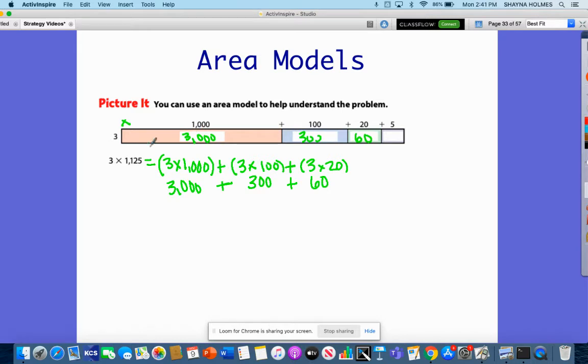Now I'm going to multiply 3 times 5. Three times 5 is 15. Now all I have to do is add up my products. That's a very important next step. After we've multiplied everything, we need to add these products together.